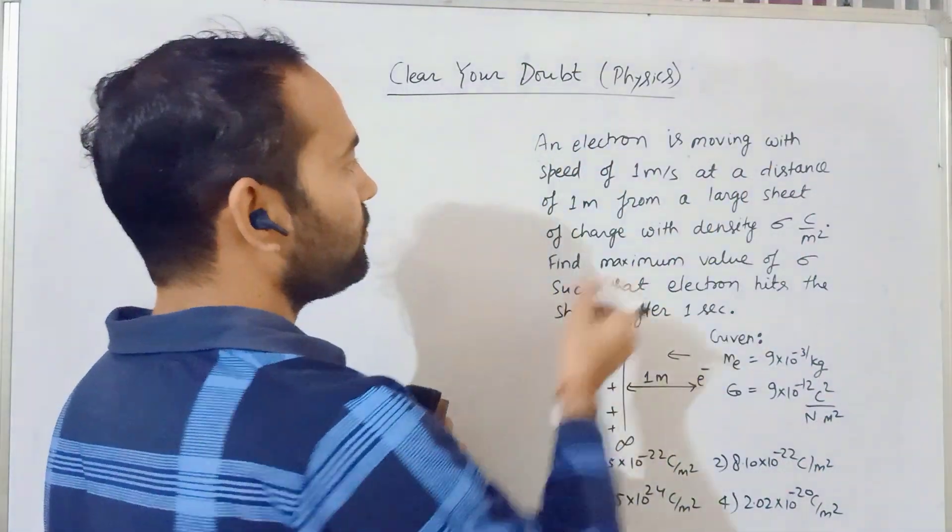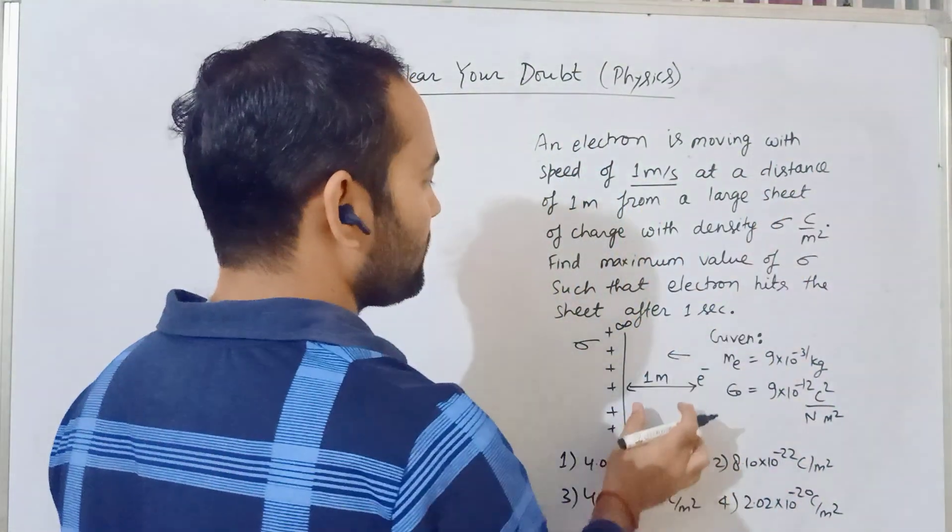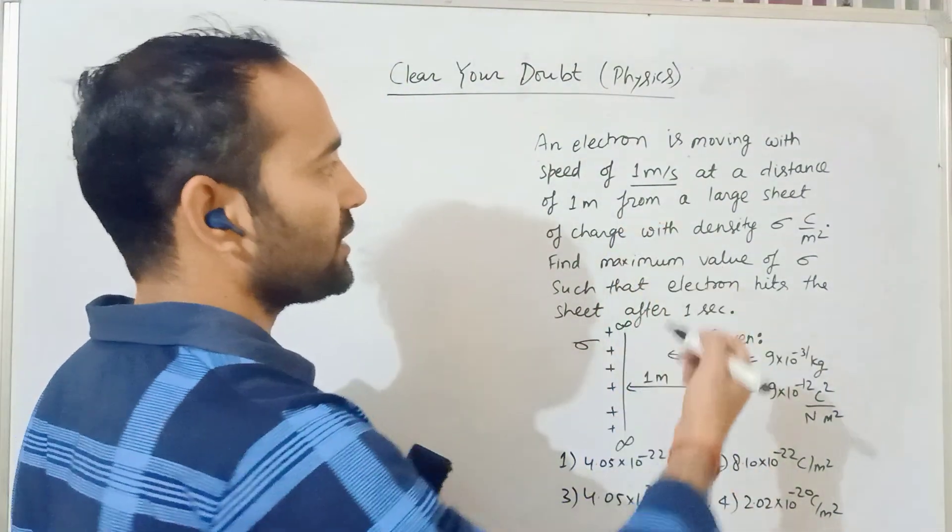An electron is moving with a speed of 1 meter per second at a distance of 1 meter from a large charge sheet.